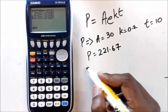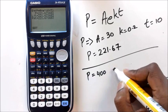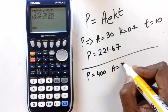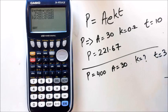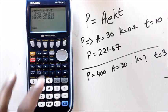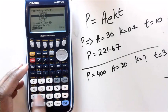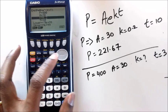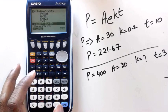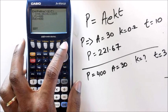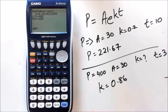Alright, now what I want to have a look at is, if P equals 400, A equals say 30, what is k when t equals 3, for example? So in this case, I'm going to P, I'm going to replace P with 400, A is 30, k is what I'm trying to figure out, so I'm going to leave it as it is, t is 3, and now if I go to k and press solve, this gives me a k value of 0.86.